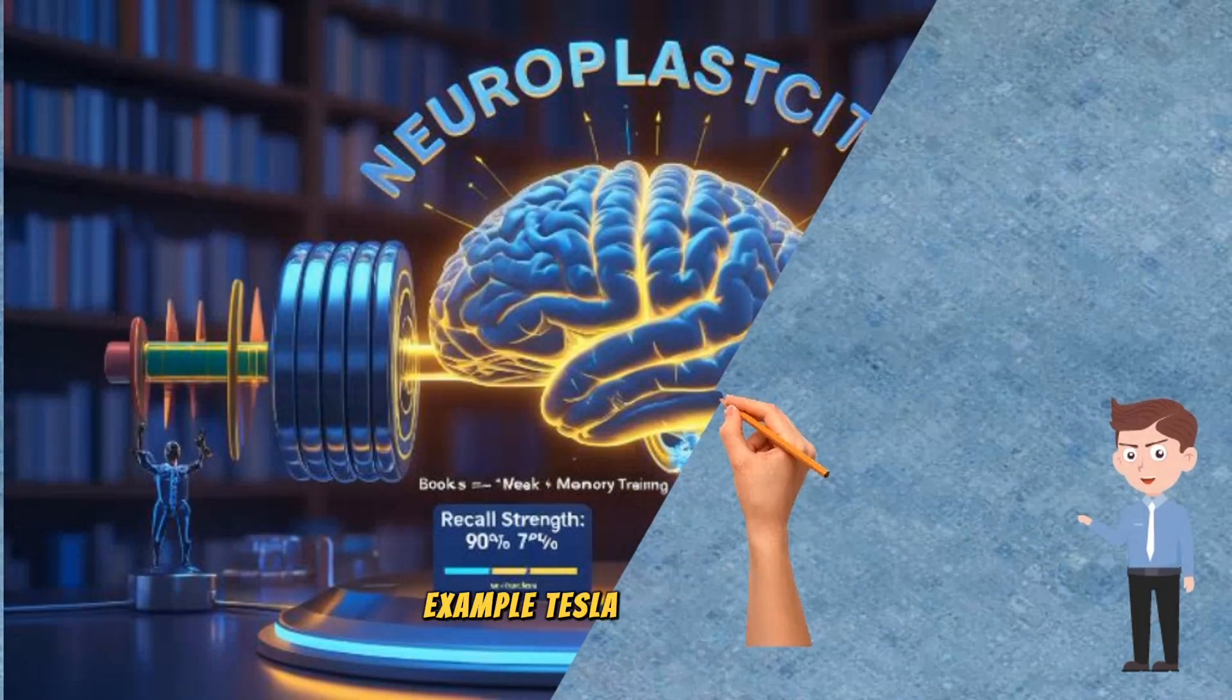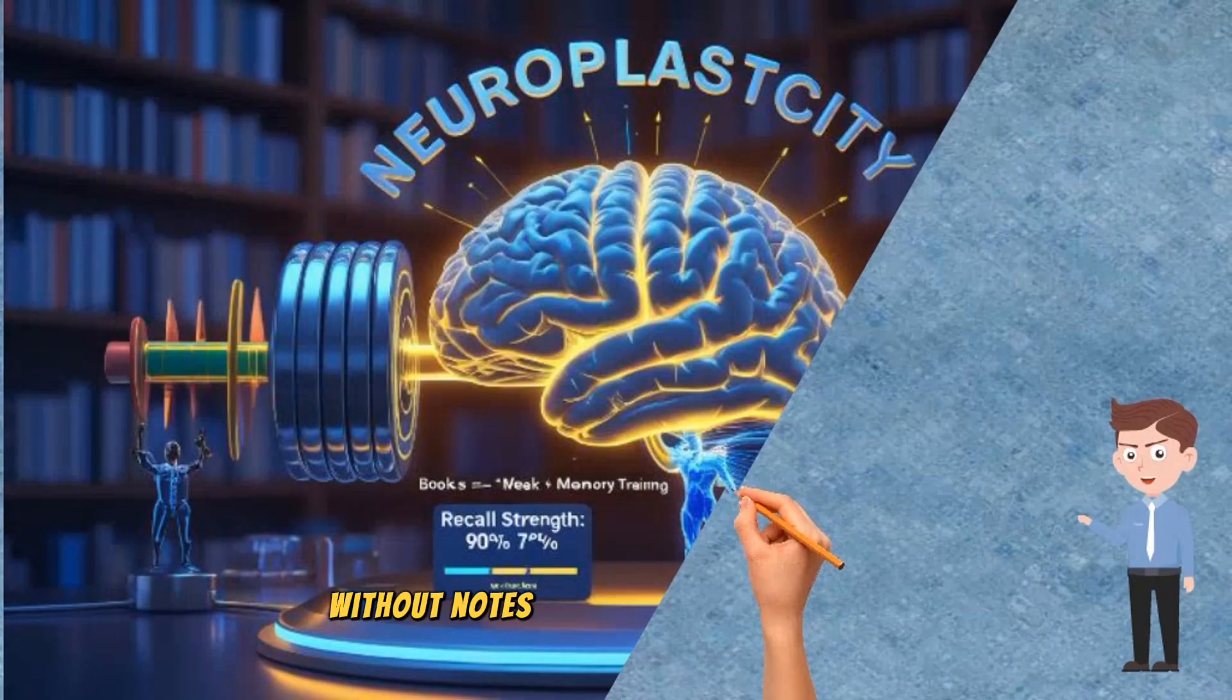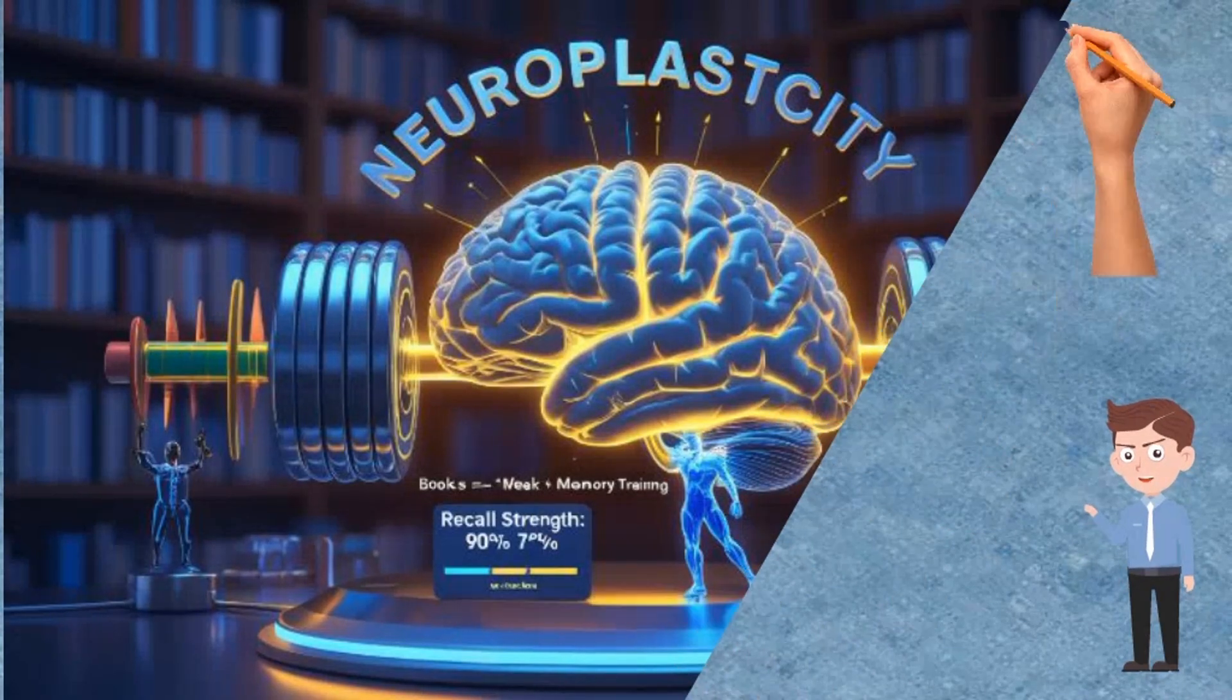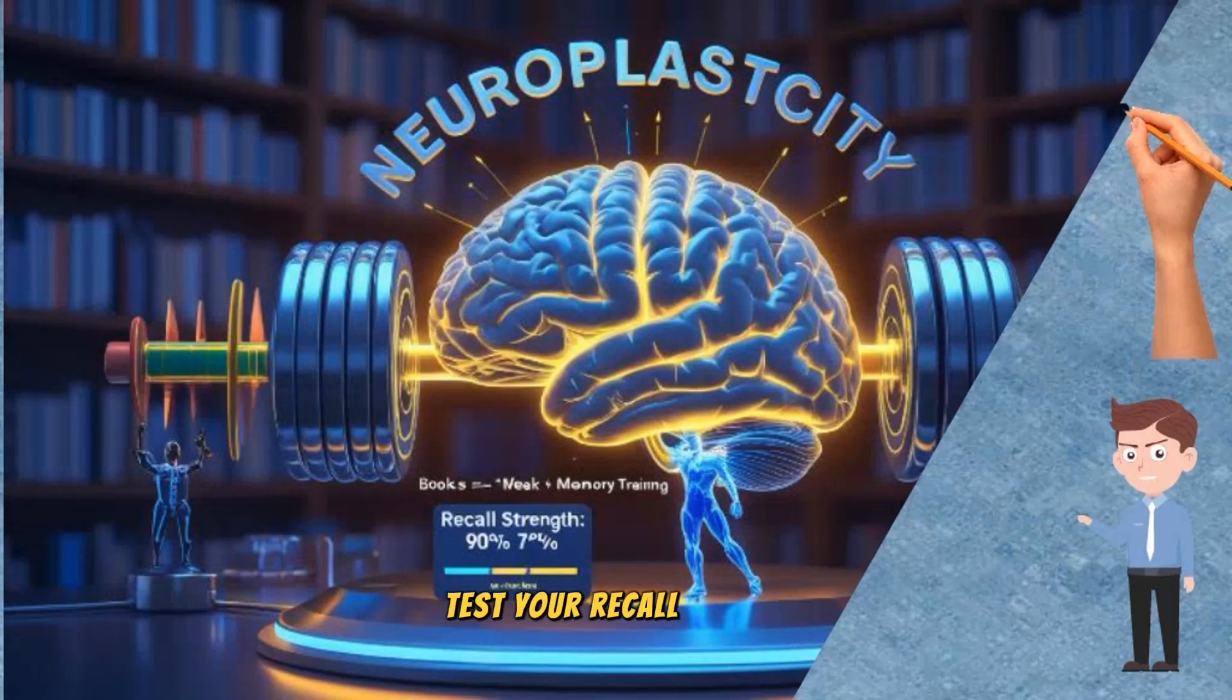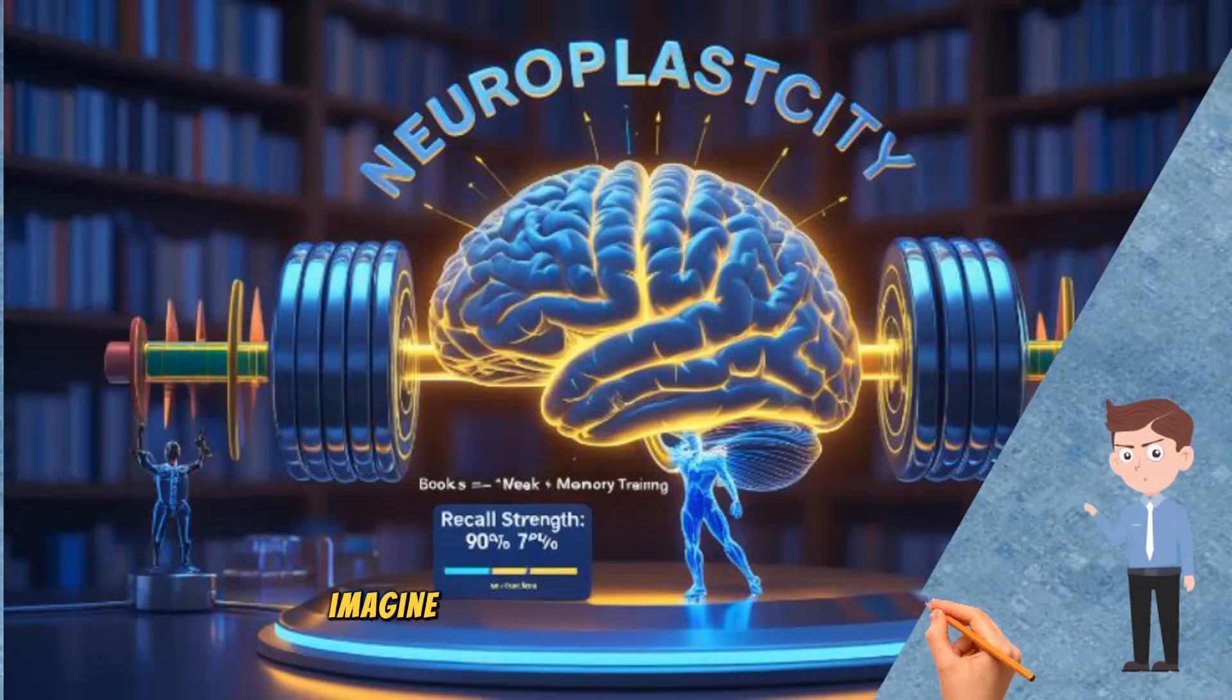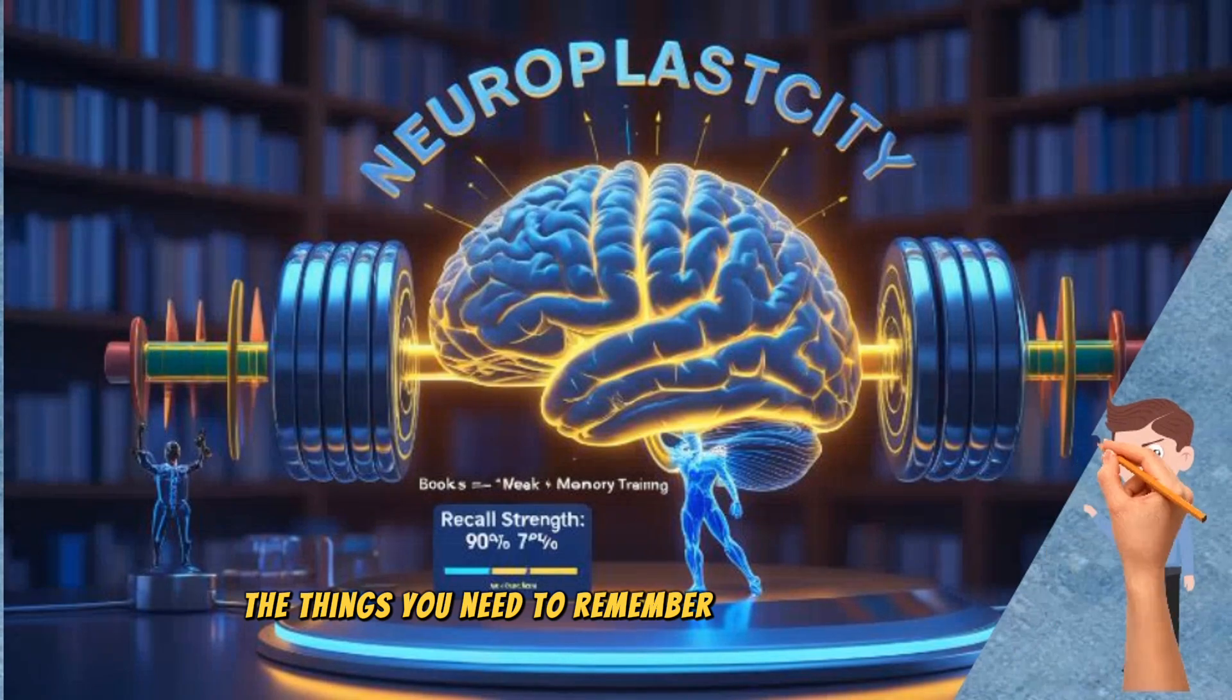Example, Tesla could design and recall an entire electrical system without notes. Just pure mental storage. How you can copy this? Memorize one thing daily. A quote, a phone number, a short passage. Test your recall later. Two, use the loci method. Imagine a familiar place, like your house. Place the things you need to remember in different rooms.